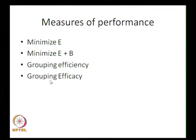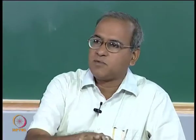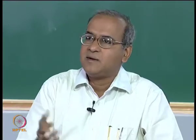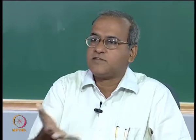E plus B is another objective. There are two other measures: grouping efficiency and grouping efficacy. Both measure the goodness of a block-diagonal structure. In our solution with two groups — machine group sizes 3 and 3, part group sizes 4 and 4 — the two diagonal blocks each have size 3×4 = 12, giving total diagonal block size 24. The total matrix size is 48.